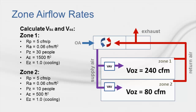In this example, a VAV system supplies cool air to each zone from the ceiling, so the zone air distribution effectiveness is 1.0. As a result, V sub OZ equals V sub BZ. Using the equations for calculating zone air flow rates, zone 1 requires 240 CFM of outdoor air, and zone 2 requires 80 CFM of outdoor air.